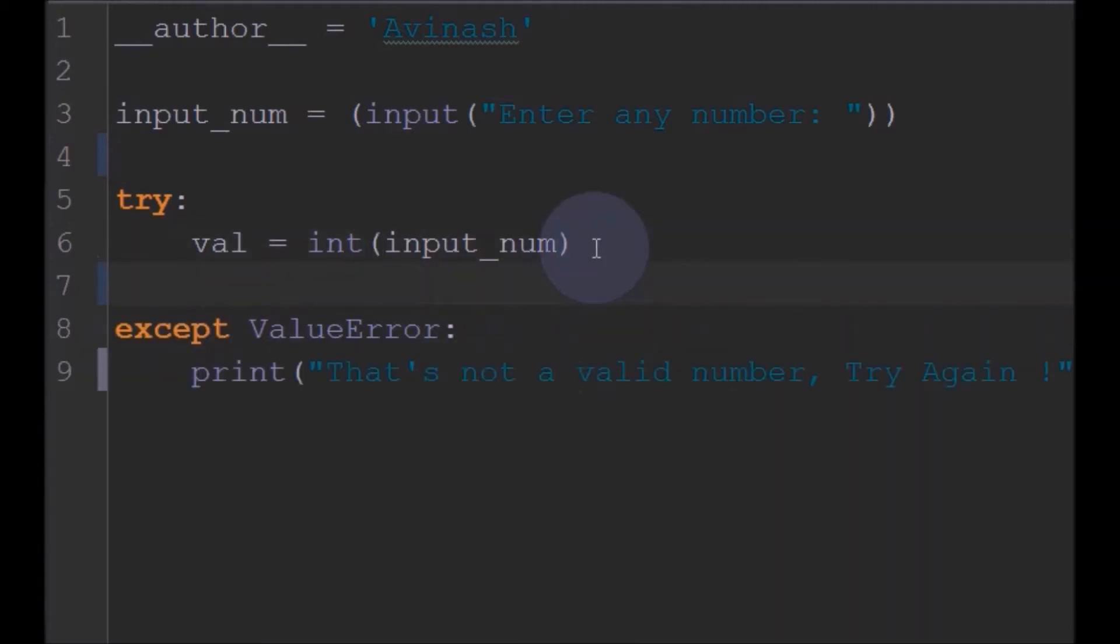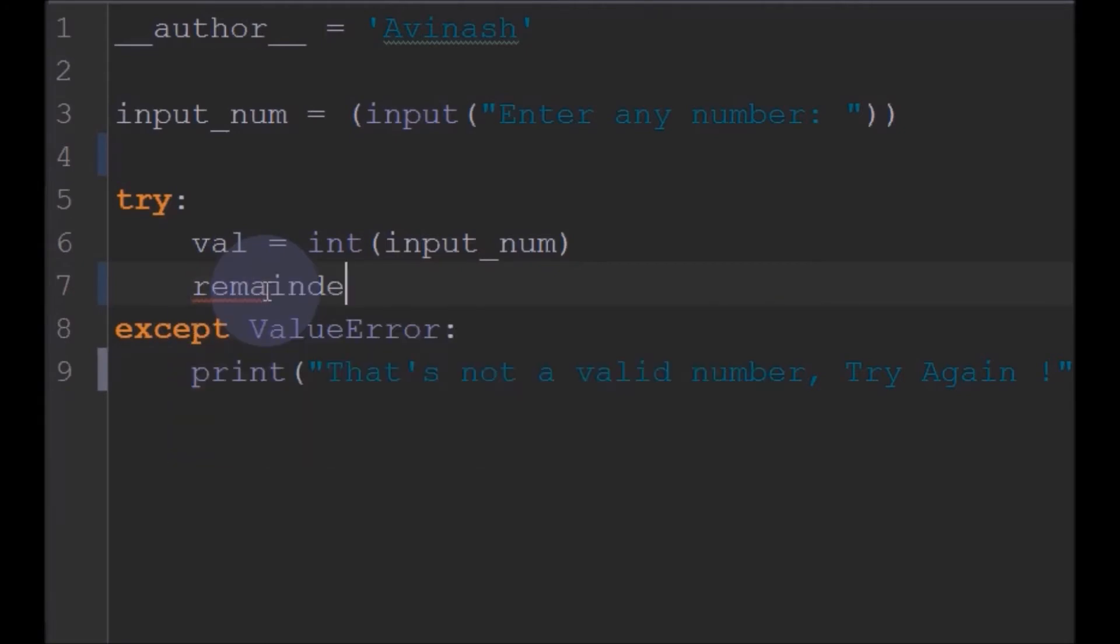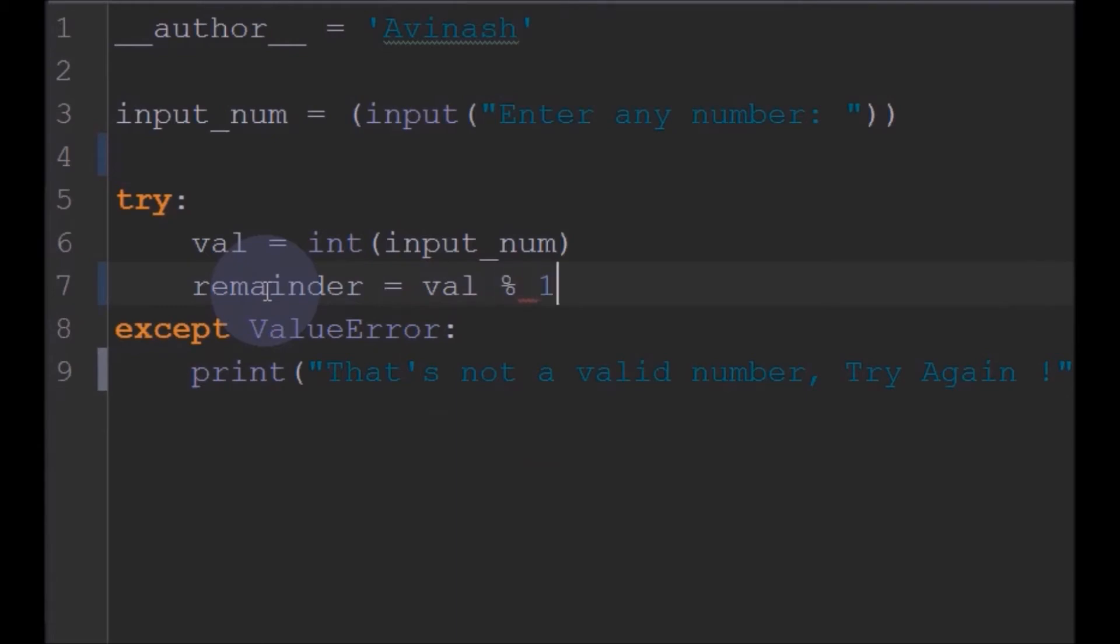So, now let's come to here. After storing the user entered number in another variable, now what we will do is we will find the remainder of the given number. We will find the remainder of the given number when divided by 10. We can find the remainder using this modulus operation.